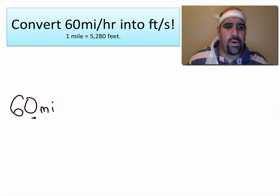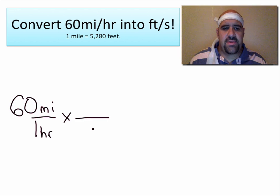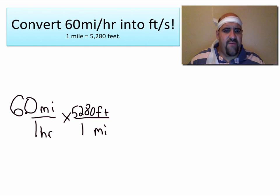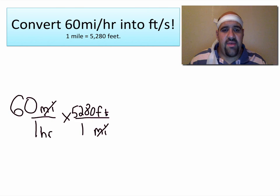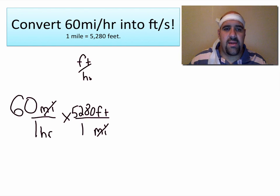So let's take a look at this. We have 60 miles per one hour, and I'm going to get rid of the miles first, doing exactly what I just described. I multiply by a fraction with miles on the bottom and feet on top — one mile is 5,280 feet. If I multiply 60 times 5,280, I am left with feet per hour, telling me how many feet I travel per hour instead of miles per hour.